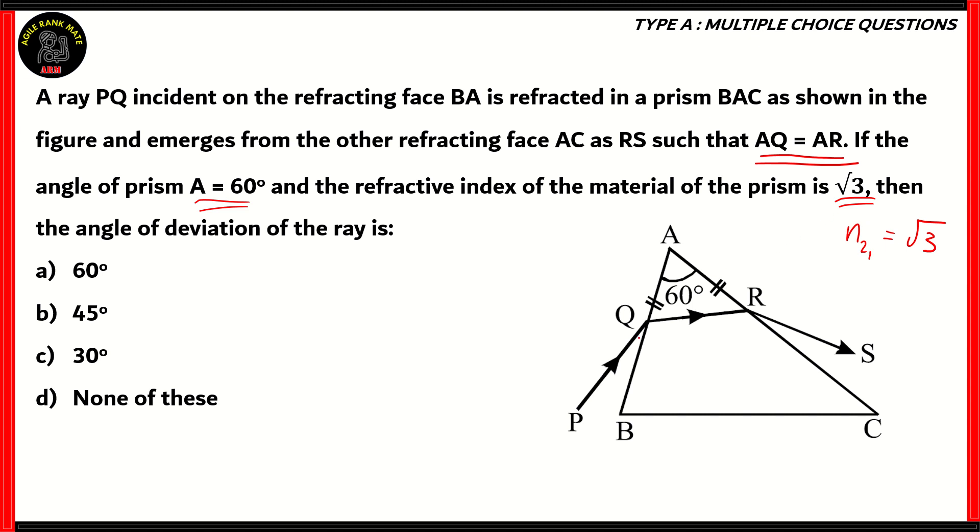These two sides of the triangle made by the refracted ray are equal, so the sides of the prism are equal. We also know that the angle of prism is 60, and we know that the refractive index of the prism, so that's n21, is equal to root 3. And the angle of deviation of the ray is 60 degrees, 45 degrees, 30 degrees, or none of these. So, how do we solve this question?